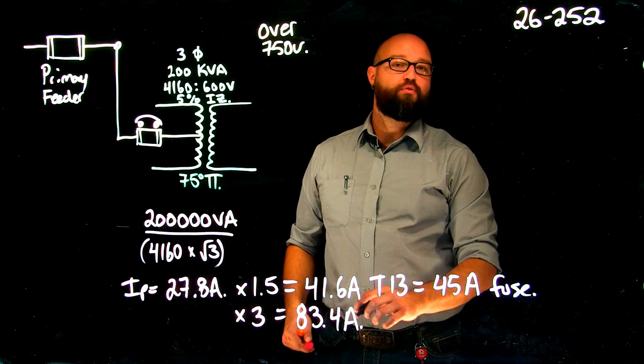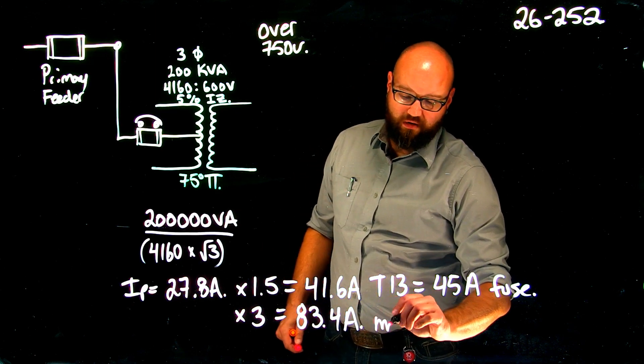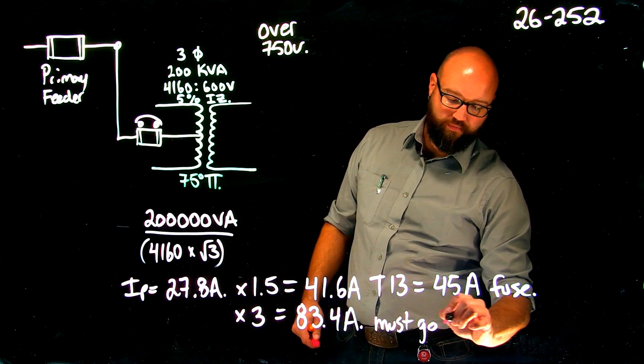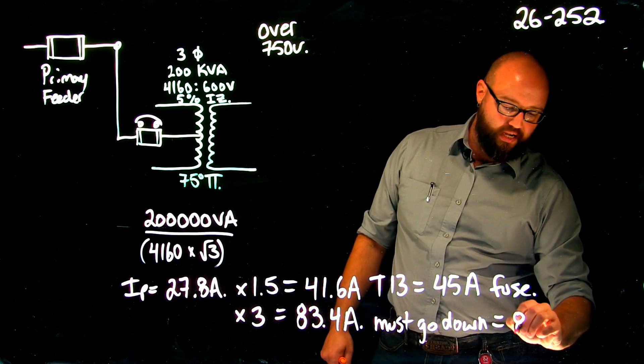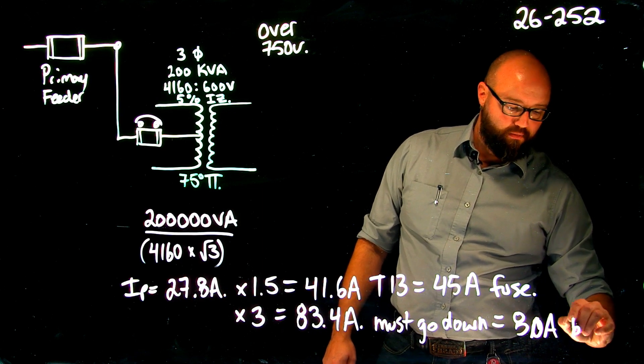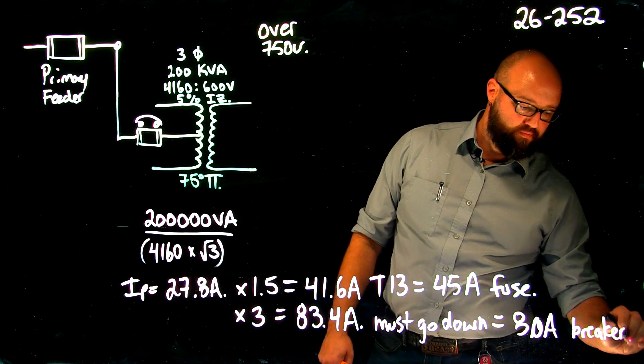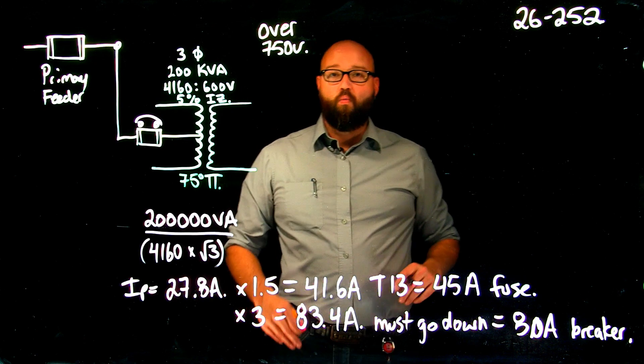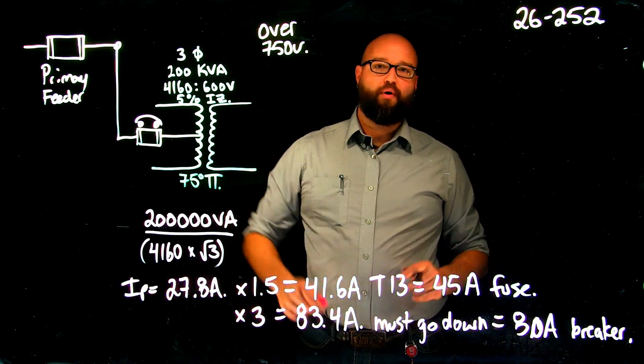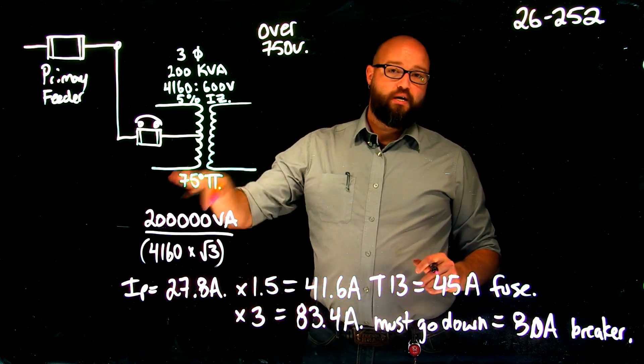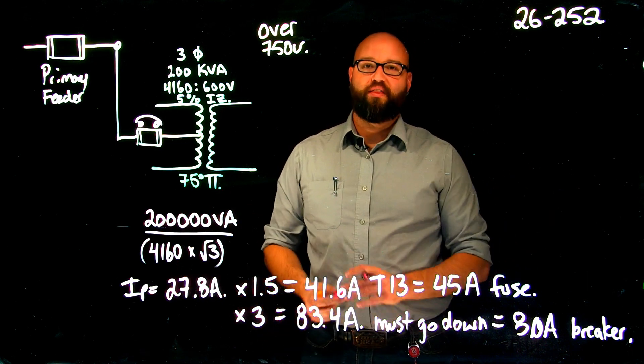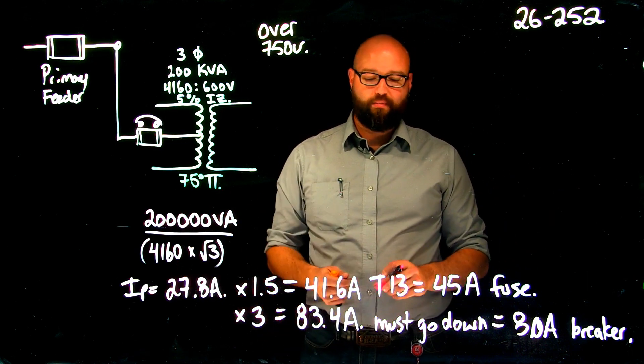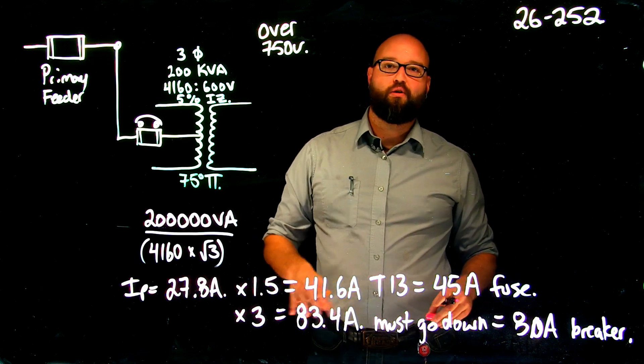Once we calculate that 300% of our rated primary current, we shall not exceed that value. So if I end up at 83.4, I must go down at table 13 and choose an 80 amp breaker. When we are dealing with primary protection only, if it is a fuse, I'm allowed to go up at that 150%. If it's a breaker, I must go down.